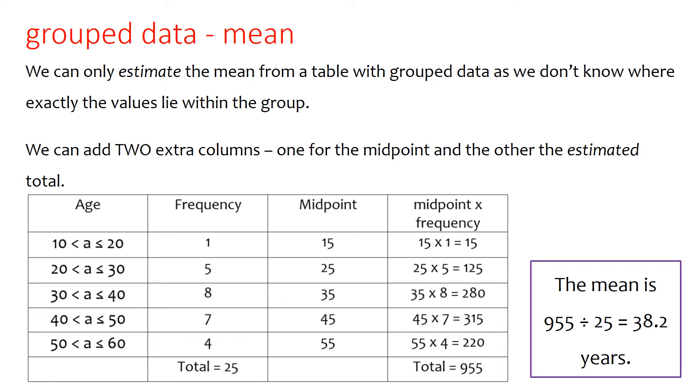And then we're going to add another column onto the end. So with grouped data, it's useful to have two extra columns on the end, the midpoint, and then the midpoint times the frequency. So what we do, similar to with the ungrouped data, we multiply the midpoint here by the frequency. So 15 times 1 is 15. The second one, 25 times 5 is 125. We do that for all the rows, and then we add up the totals at the bottom.